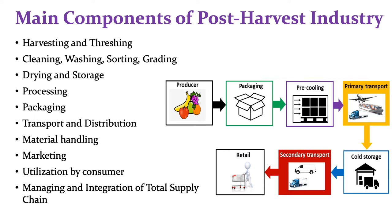Then drying and storage, then processing, packaging, transportation and distribution, material handling, marketing, utilization by consumer, managing or the integration of total supply chain. All these unit operations are included in the post harvest unit operations, which are carried out to increase the shelf life of the product by using various processing technologies and storage under refrigeration conditions.